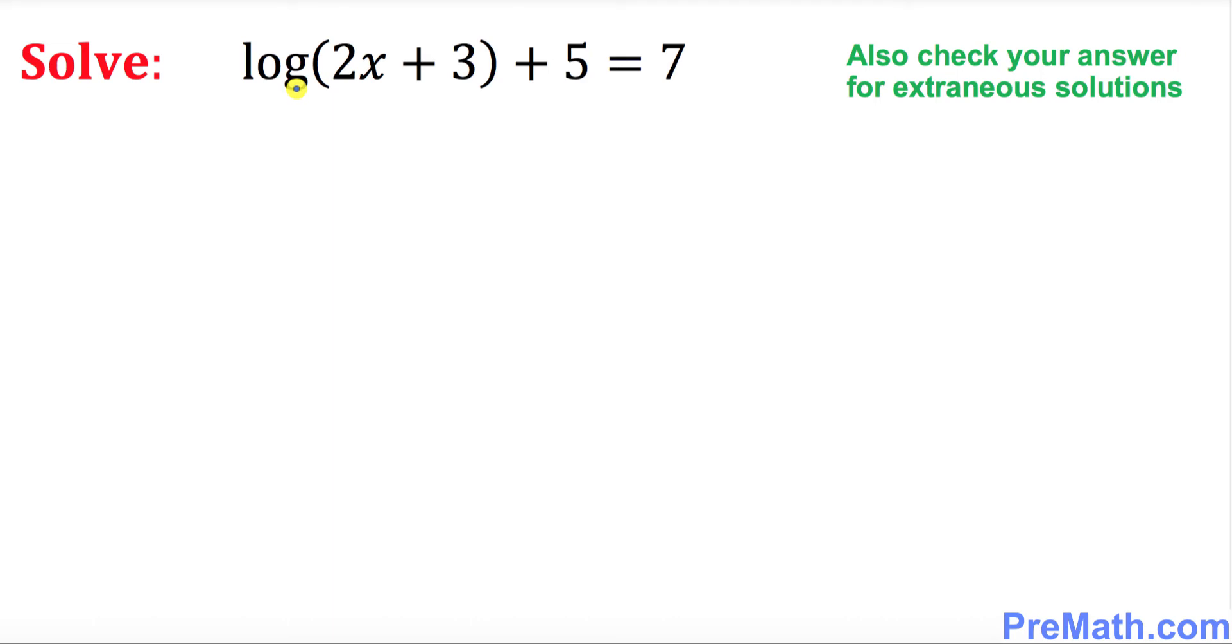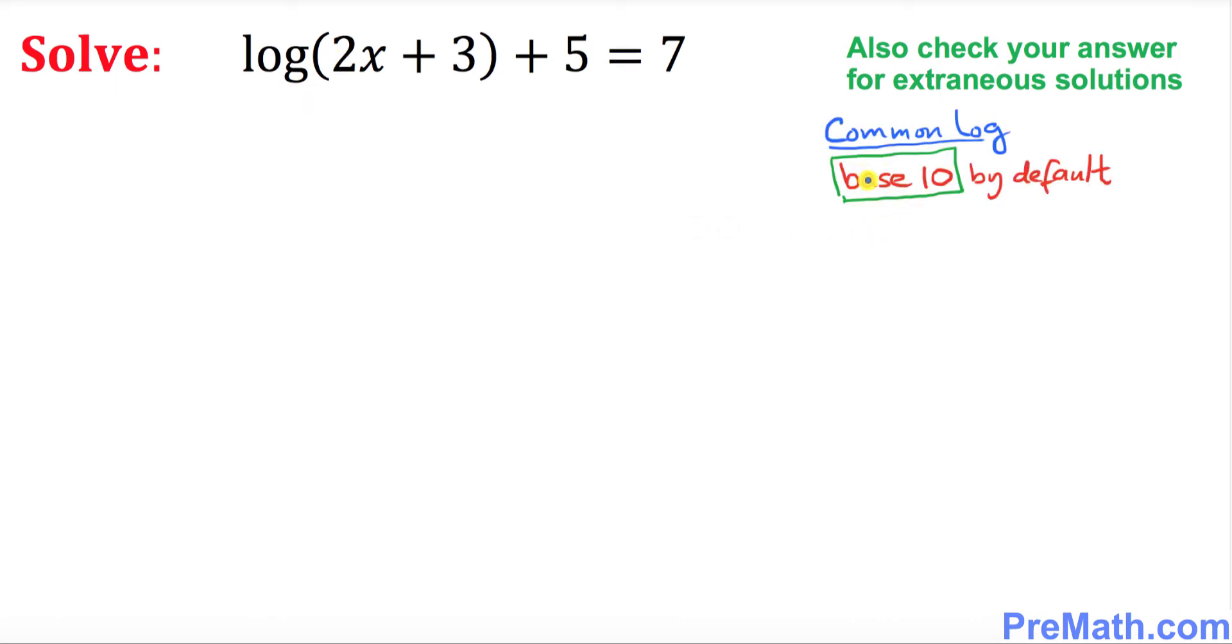As you can see, the base of this log is missing. Whenever the log has a missing base, this kind of log is called a common log, and the base is always 10 by default. So whenever the base is missing, you put down 10.